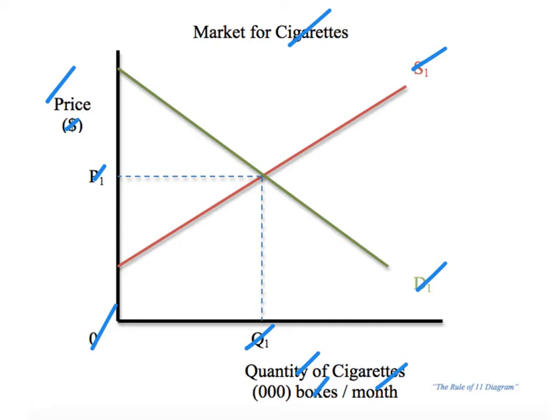An indirect tax is a tax placed by the government on producers. It's indirect because the tax is not paid directly to the government by consumers — like an income tax — but rather through the producers. When you go to the store and buy a pack of cigarettes and pay an extra dollar in tax, that dollar is paid to the store, and then the store passes that tax per box of cigarettes on to the government. The total tax burden will be shared between consumers and producers.